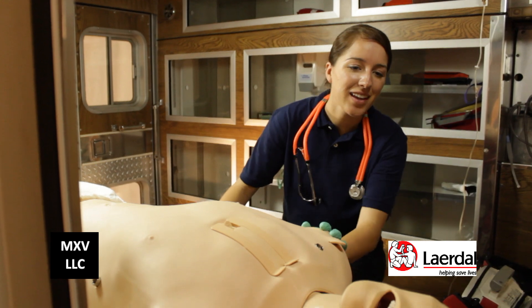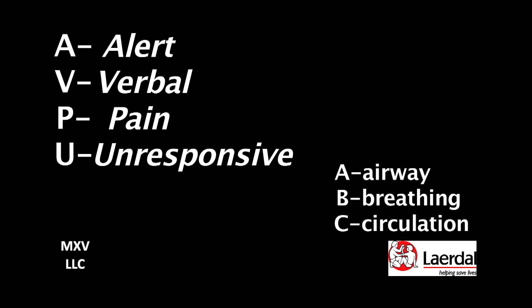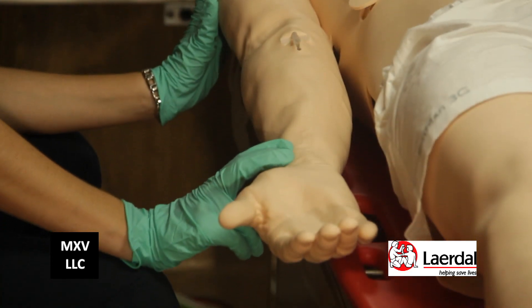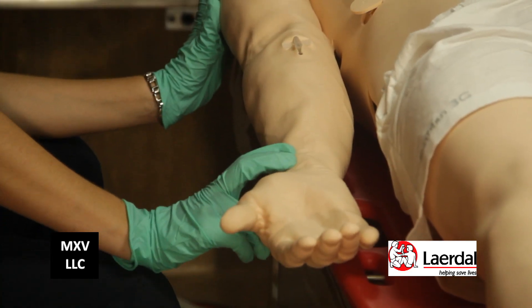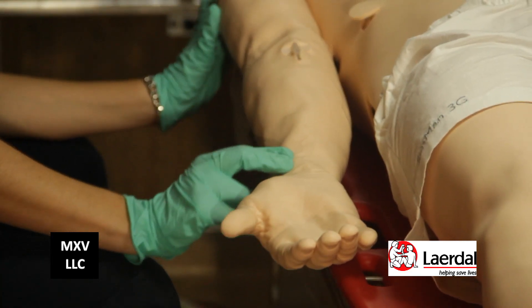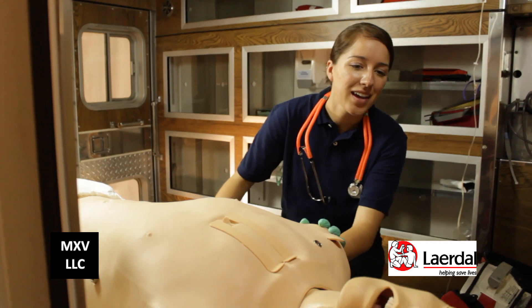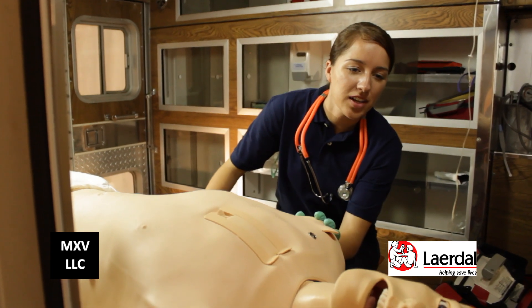The paramedic introduces herself to the patient in order to assess AVPU and ABCs, while placing a hand on her shoulder to comfort her and the other hand on her wrist to complete a rapid radial pulse check. The paramedic also notices the patient's skin is cool and clammy.